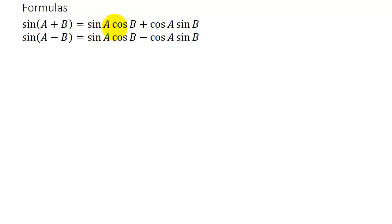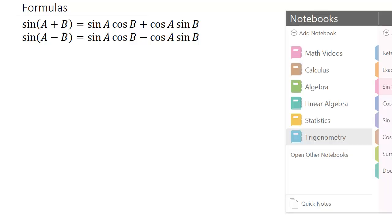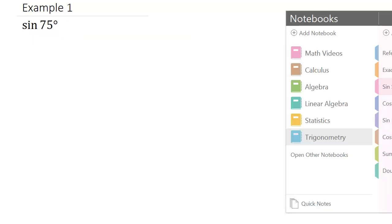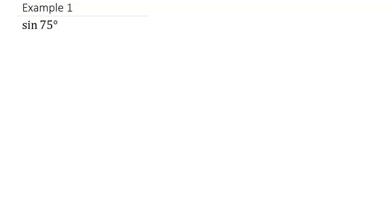You can see that the formulas are the same. The only difference is the sign in between them. For the sum and difference of sine, if the sign in between A and B is plus, then this sign is plus; if it's minus, then this is minus. So let's take a look at an example: we have the sine of 75 degrees and we want to find the exact value.